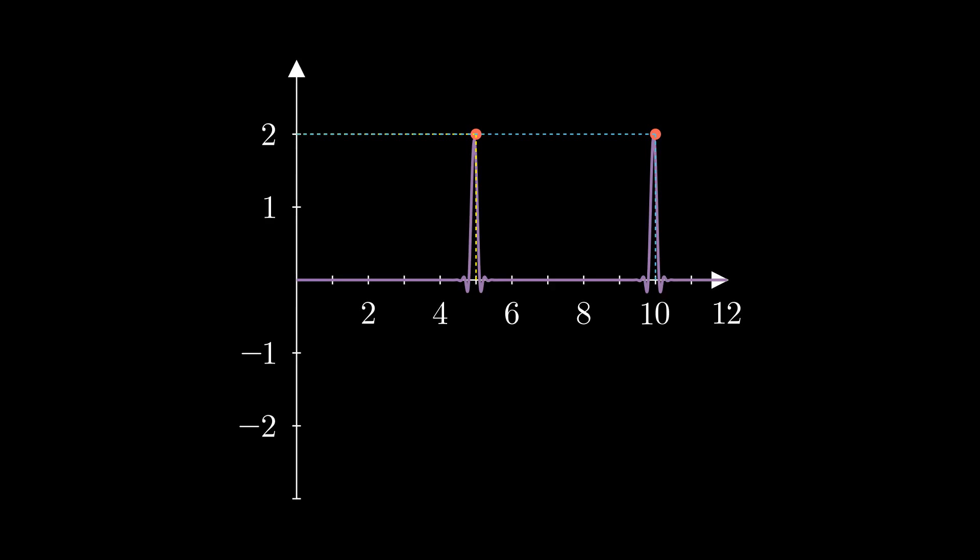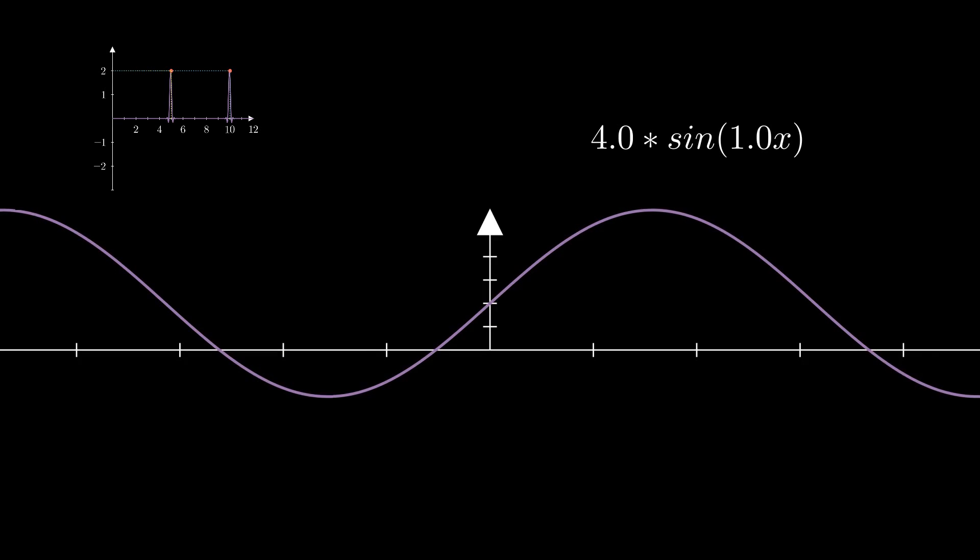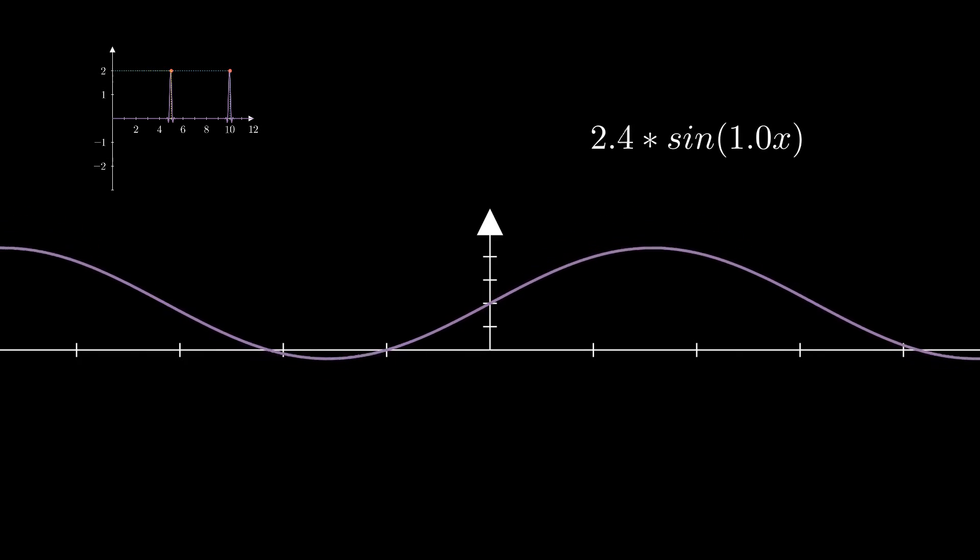So let's use this information to create a wave. Let's start off with a simple sine wave like this. Note how changing the number on the outside changes the height of our sine wave. And remember how the spike was 2 units long. So let's make our outside number equal to 2.